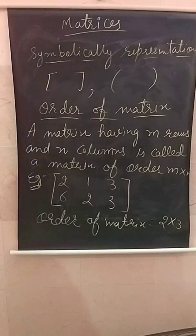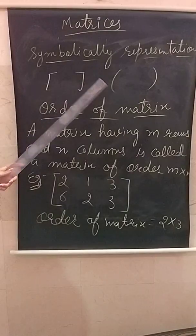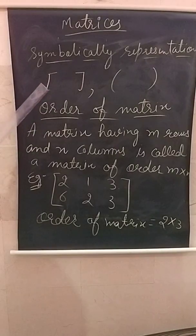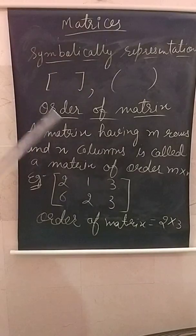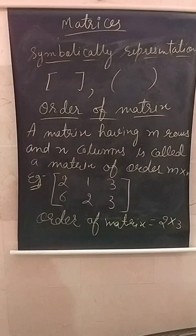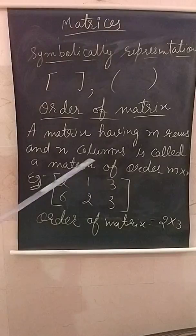Next is how we can represent matrices symbolically. Matrices can be represented by several notations, but usually we use this square bracket type. The next topic is order of a matrix: a matrix having m rows and n columns is called a matrix of order m by n.